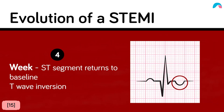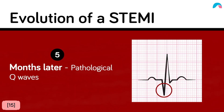After one week, the ST segment will be back to normal and the T wave inversion will still be present. Months later, only the pathological Q wave will be present, as the T wave will then convert back to positive. This is what we call the evolution of a STEMI.